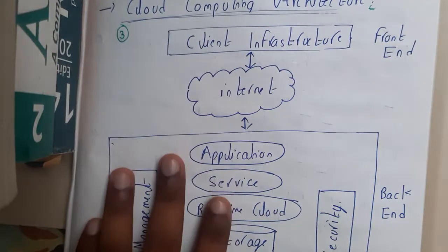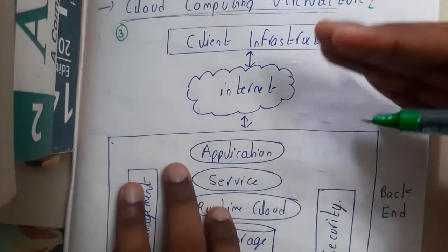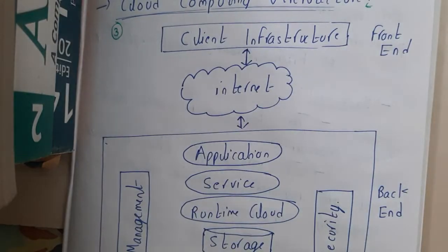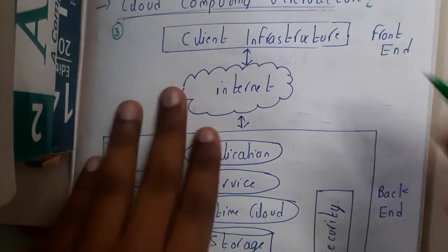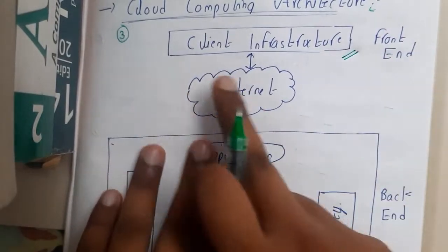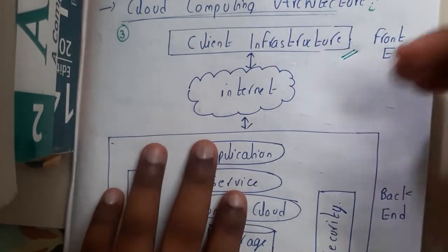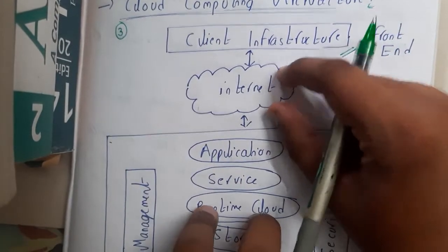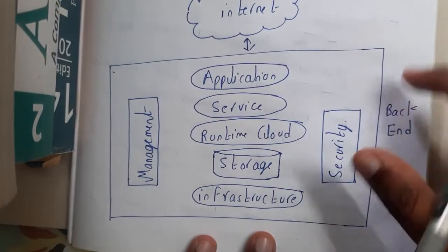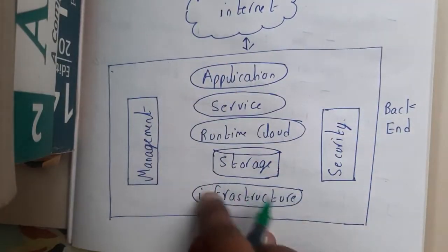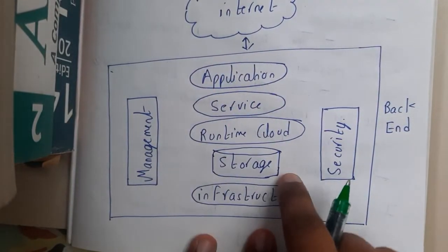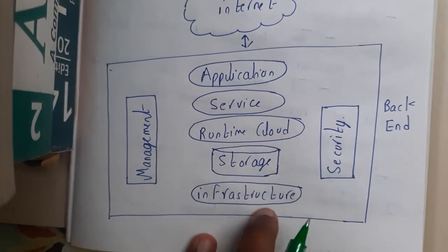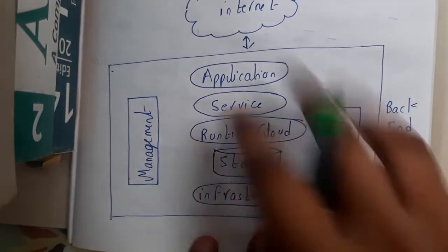Here we are having the client infrastructure — basically whatever the client will be seeing. He can manage the infrastructure and his account; all those things come under the client infrastructure. This is the front end part, whereas using the internet he will connect to the back end and use the resources which belong to the back end. He can use application service, run cloud storage, infrastructure, manage, and security.